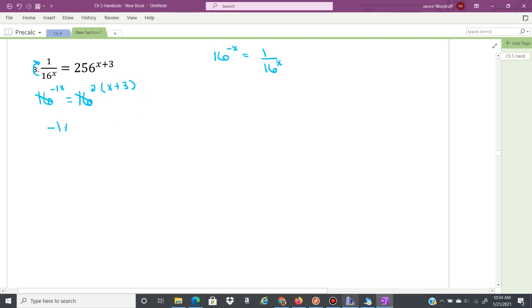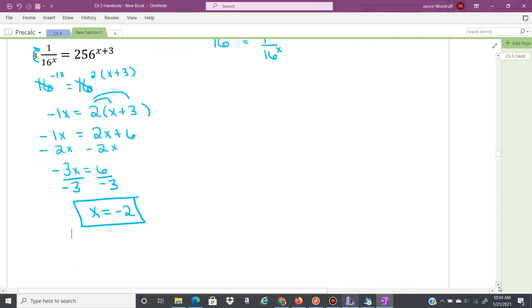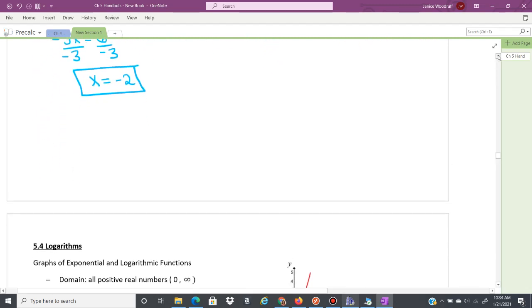You have negative 1x equals 2 to the x plus 3. And this is going to distribute. We're going to have 2x plus 6. I'm going to take this 2. I'm going to subtract it from both sides. That's going to give me a negative 3x equals 6. Divide by negative 3. I'm going to get x equals negative 2. So our solution there is negative 2. And that should be the end of 5.3.